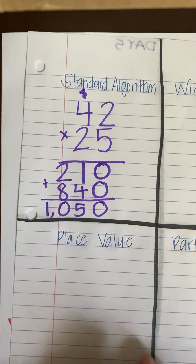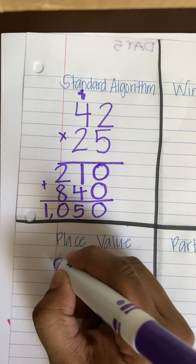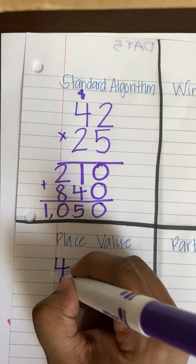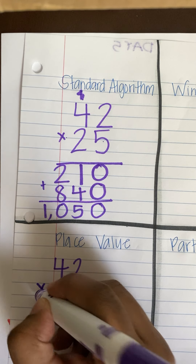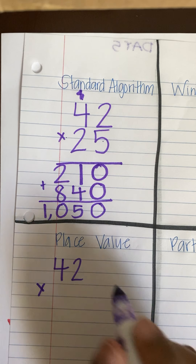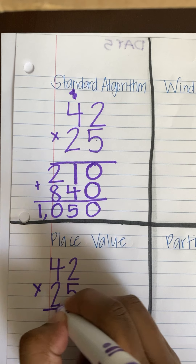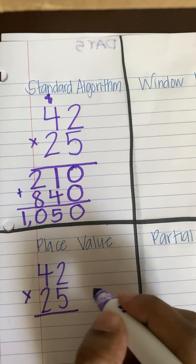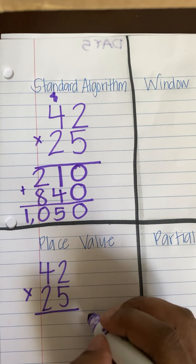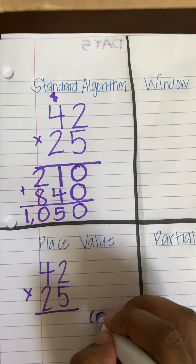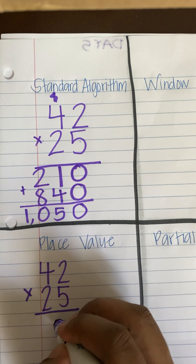I'm going to use place value. I'm going to write those out. 42 times 25.